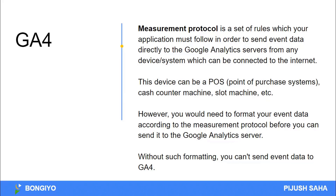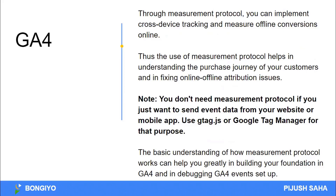The website is possible, the app is possible, and even different types of devices can use this. You can implement cross-device tracking and measure offline conversions online. The use of measurement protocol helps in understanding the process journey of your customers and in fixing online-offline activation for users.